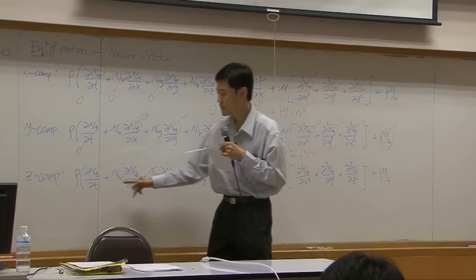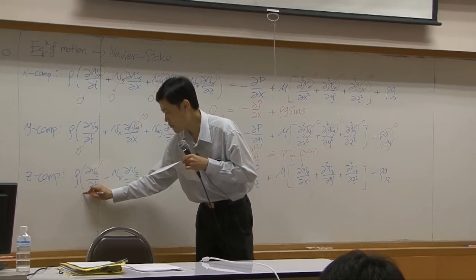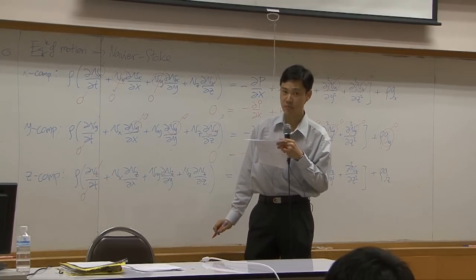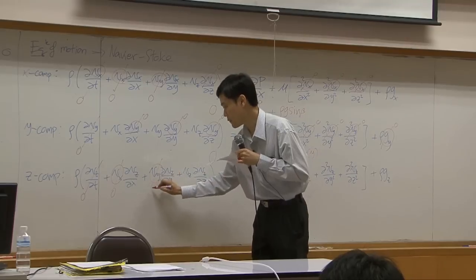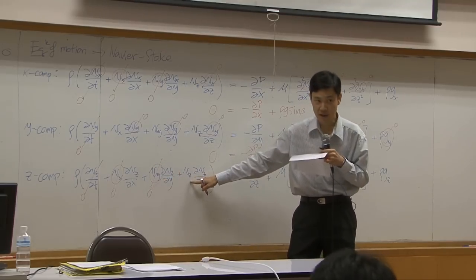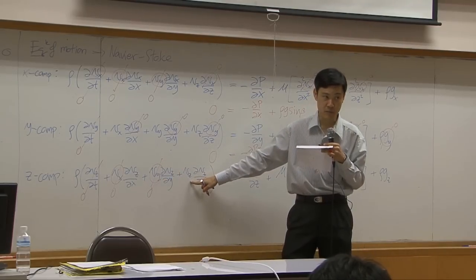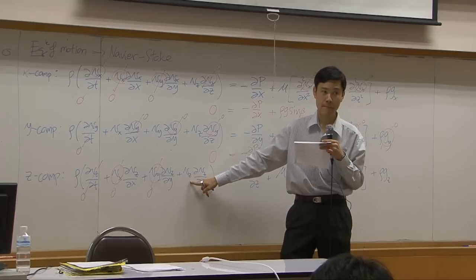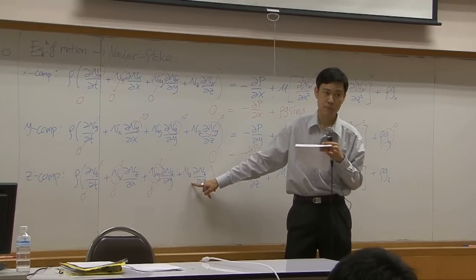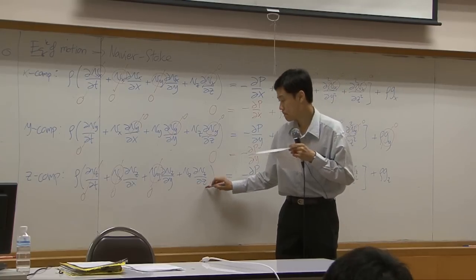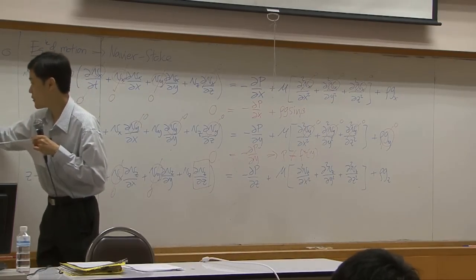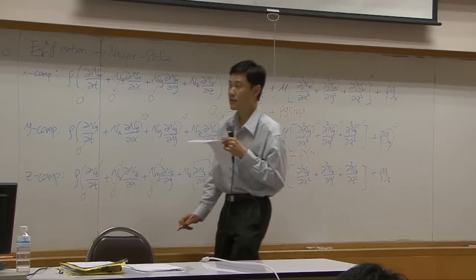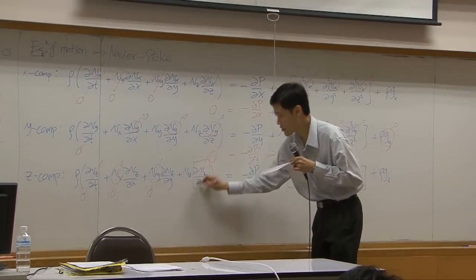For the last component, the first term is zero due to the steady state assumption. Vx is zero. Vy is zero. Vz is not zero. Can we drop the Vz term? No, we need to keep it — because Vz is not a function of z. You obtain this from the equation of continuity, which gives you that this term becomes zero.